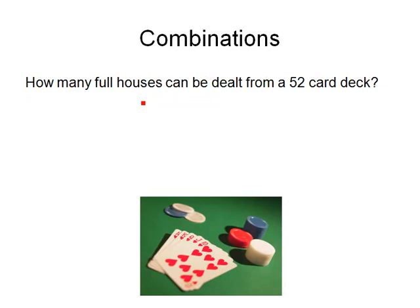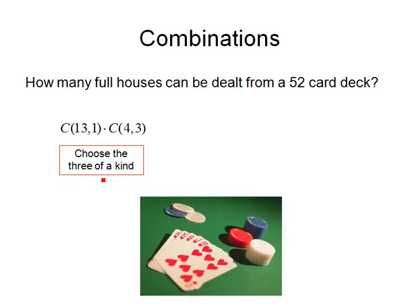What about full houses? A full house is 3 of a kind and 2 of a kind. To choose the 3 of a kind, first we choose what denomination the card is — will it be 3 aces, 3 kings, 3 fives? From our 13 denominations we choose 1, and then from the 4 cards in that denomination we choose 3. So C(13,1) chooses the denomination and C(4,3) takes 3 of the 4 cards in that denomination, giving us our 3 of a kind.